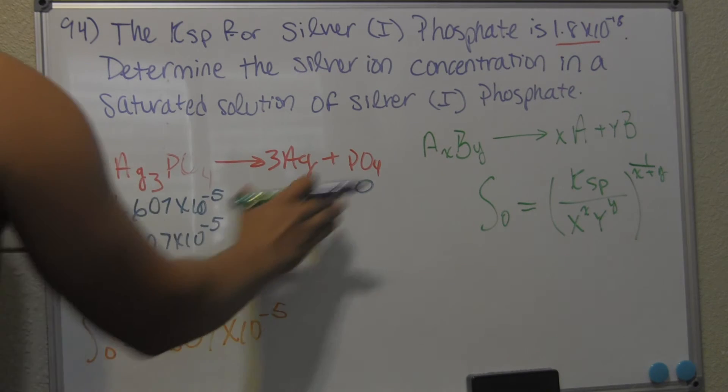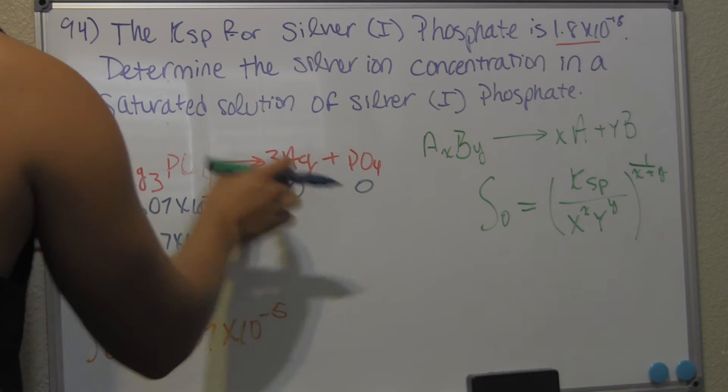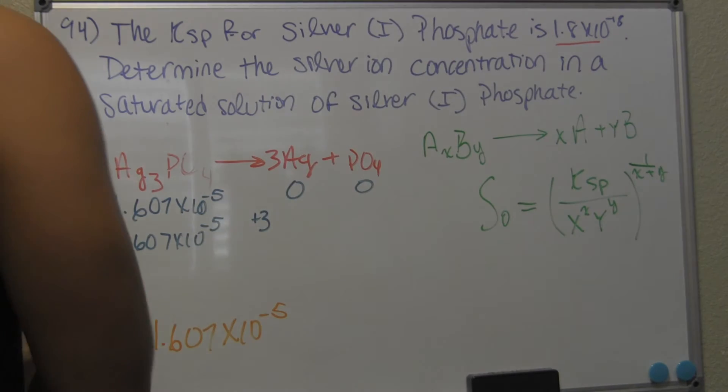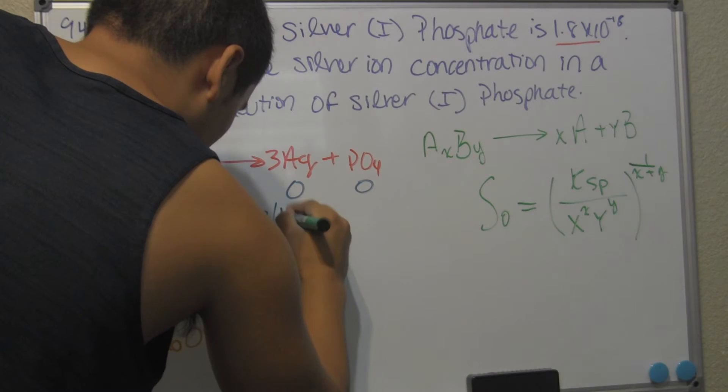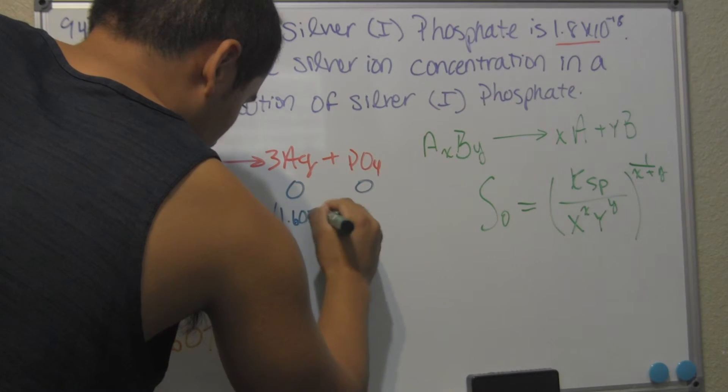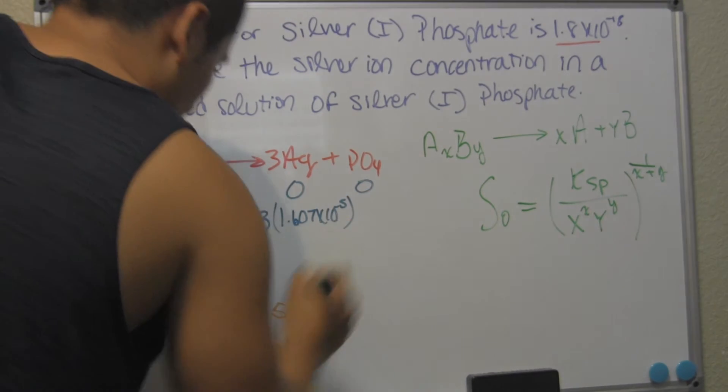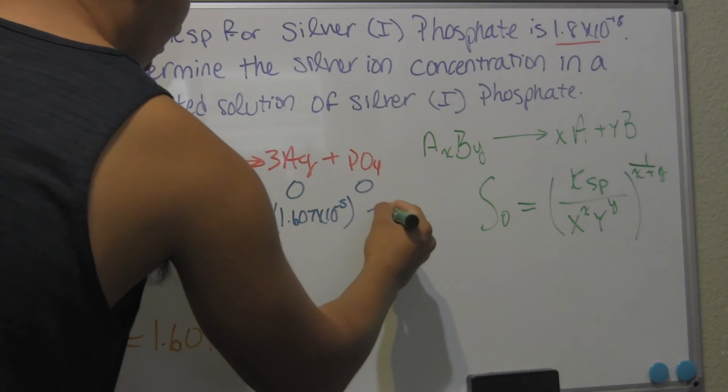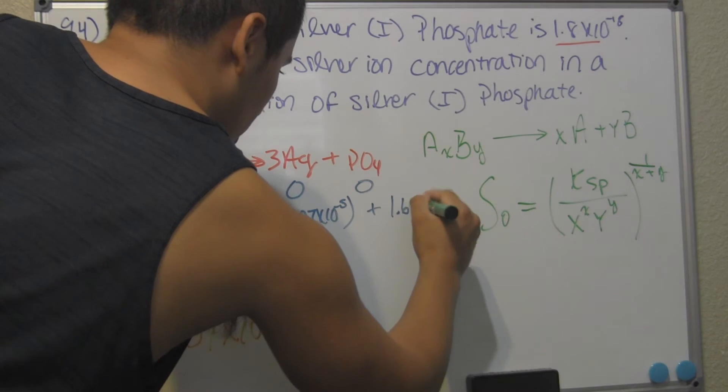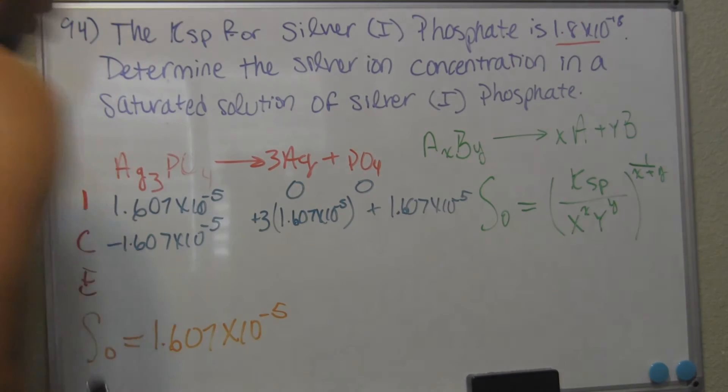so every mole that dissolves, three moles of silver are going to be released. So 3 times 1.607 times 10 to negative 5. And this is going to be plus 1.607 times 10 to the negative 5.